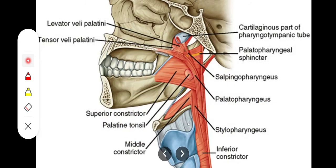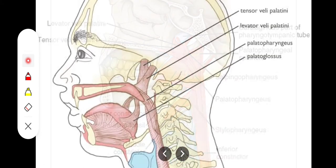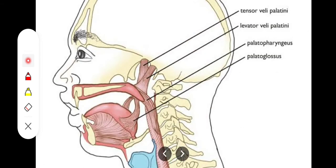The first two muscles are the levator veli palatini and the tensor veli palatini. They both originate from the base of the skull — one from the sphenoid bone and the other from the petrous part of the temporal bone. The tensor veli palatini comes from the greater wing of the sphenoid bone and also from the lateral part of the auditory tube.